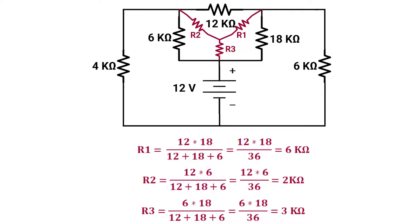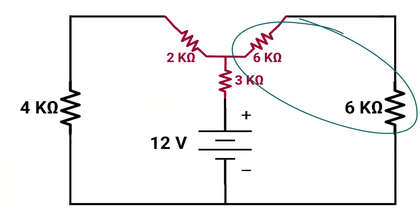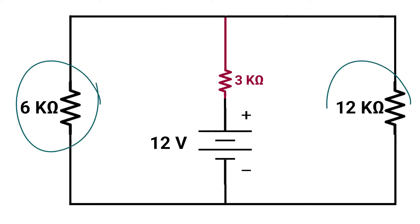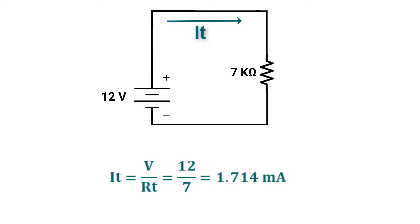R3 will equal 6 times 18 over 36, which will equal 3 kilo-ohm. Now 4 kilo-ohm is in series with 2 kilo-ohm, and 6 kilo-ohm is in series with 6 kilo-ohm. Our circuit is now simple: 6 kilo-ohm is in parallel with 12 kilo-ohm, which equals 4 kilo-ohm in series with 3 kilo-ohm, giving a total resistance of 7 kilo-ohm.